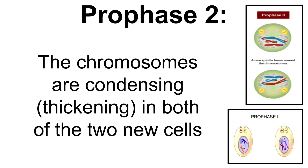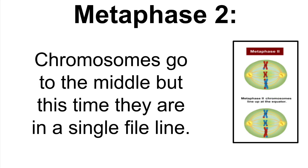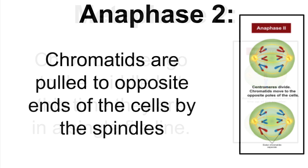Now meiosis II begins. It starts off with prophase II — during this phase, the chromosomes are condensing, so they're thickening, in both of the two new cells. Next, we have metaphase II. During this phase, chromosomes go to the middle, but this time they're in a single file line, not like in metaphase I when they were lined up with the homologous pairs in the middle.